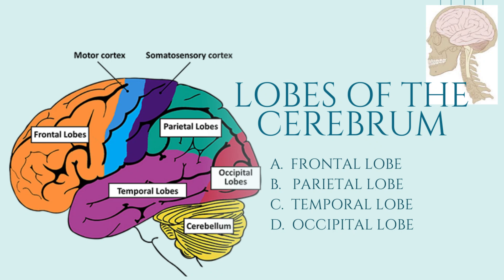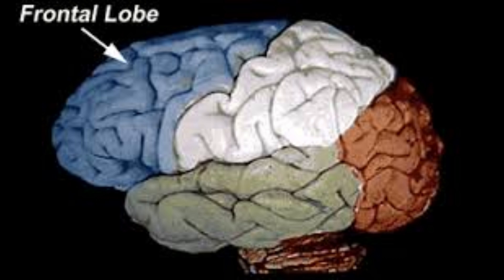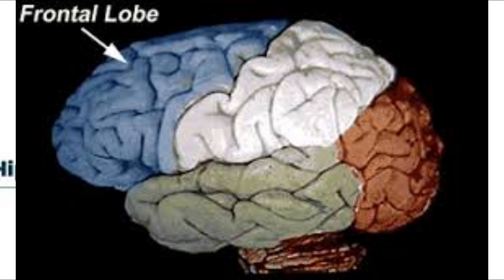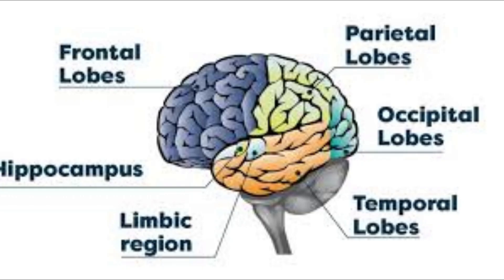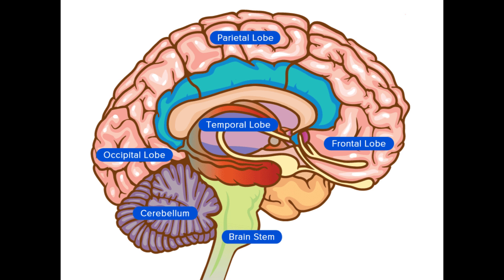Lobes of the cerebrum. The human brain is divided into four distinct lobes, each responsible for different functions. Each lobe has specific roles related to sensory processing, motor control, decision-making, and more. These lobes work together to control everything from movement and decision-making to sensory perception and memory.